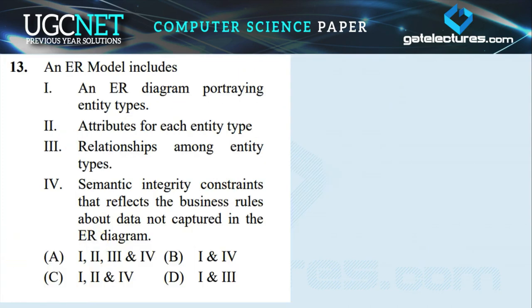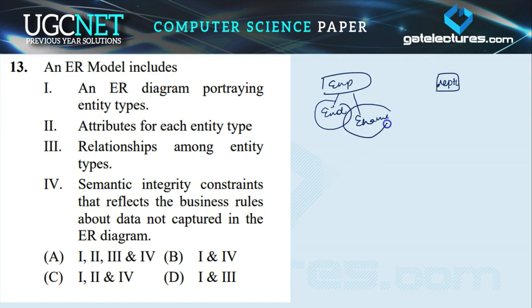Question number 13: An ER model includes what? Option A states: an ER diagram portraying entity types — yes, entities like employee and department are portrayed by ER diagrams. Attributes of each entity type like employee ID and employee name are also represented in ER models. Relationships among entity types like 'works for' are also included by ER diagrams. Integrity constraints that reflect business rules about data are also included. So all of the above are included, making option A the correct answer.